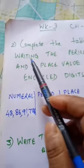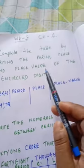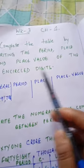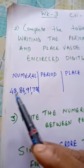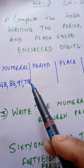Question number 2: Complete the table by writing the period, place and place value of the encircled digit. Now here is the numeral: 4, 3, 8, 6, 9, 1, 7, 0, 6.